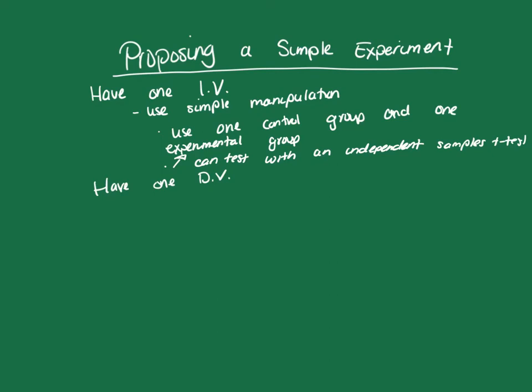Your dependent variable must be something that can be measured, and you must state in the measures section very clearly exactly how you would measure it. For example, if I was proposing an experiment to see whether students given gummy bears would get different scores on a quiz, I would detail exactly what would be on that quiz, showing it would be the same quiz given to both groups, with the only difference being whether or not they received gummy bears. In the analytic strategy section, I would state that I will use an independent samples t-test to compare the quiz scores of the control and experimental groups.